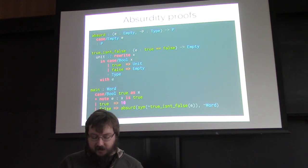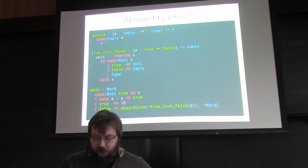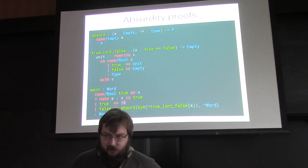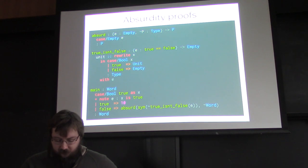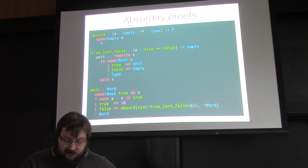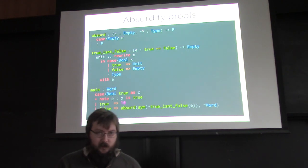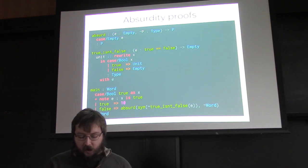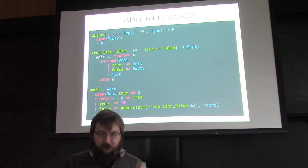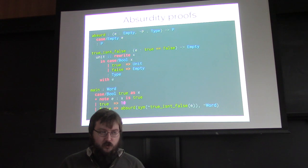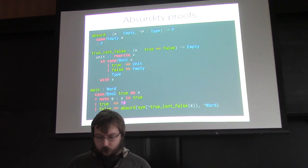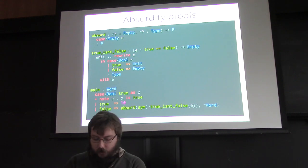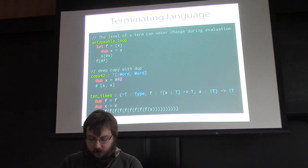We can do the standard empty type with an absurd function. Empty is the uninhabited type — it has no constructors. From empty we can prove any proposition, and we can use that to show that 'true is not false': there's no term that creates a proof that true equals false. We can use absurd to mark unreachable code — for example, in a case expression on true, the false case is impossible to reach.